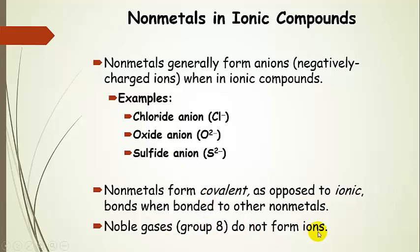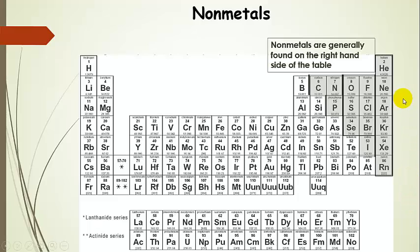Now noble gases, which are in group 8, they do not form ions. I'm going to go back to the previous slide and just point that out. These guys right here, these are the noble gases, and they do not form ions.